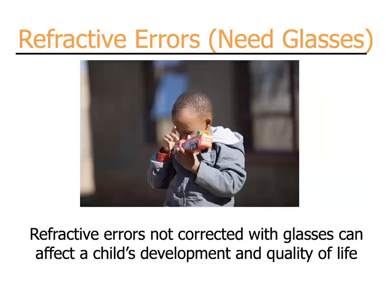Refractive errors are blurry vision needing glasses. If they are not corrected with glasses or spectacles, refractive errors can lead to permanent decrease in vision and decreased development and quality of life.